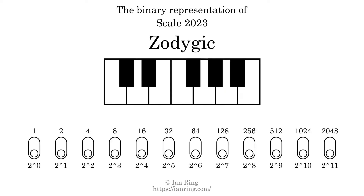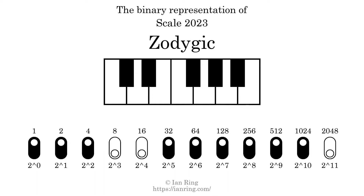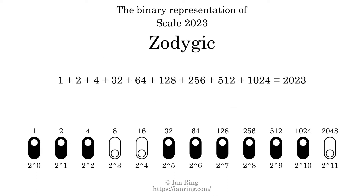The binary representation of this scale is determined by mapping tones of the scale to binary digits. Each binary digit represents a power of 2. To get the scale number, we add the powers of 2 together. The powers of 2 that are present in the scale, all added together, equals 2023. That is why the scale number, in decimal, is 2023.